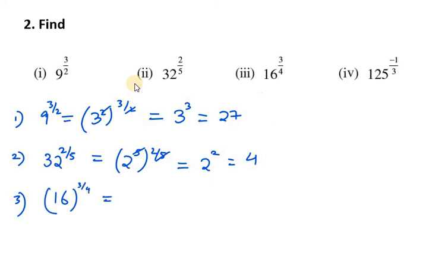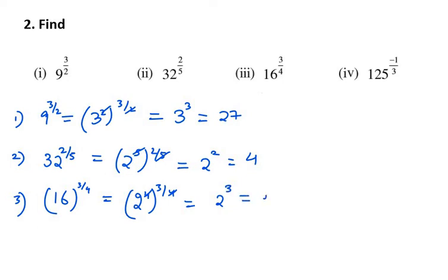The third part is 16 raised to the power 3 over 4. We write 16 as 2 raised to power 4, because we have 3 over 4 as the other exponent. The 4s cancel out, leaving us with 2 raised to power 3, which equals 8.